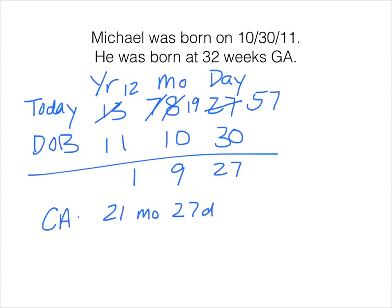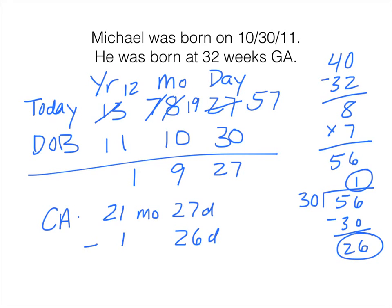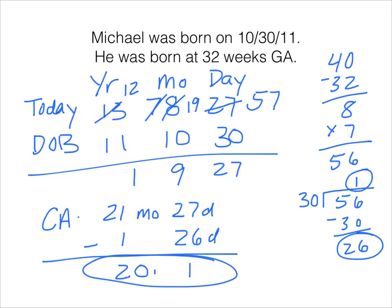So 40 minus 32 is 8 weeks premature. Multiplying by 7 gives 56 days premature. Dividing by 30: 30 goes into 56 once, leaving a remainder of 26. So Michael was 1 month and 26 days premature. Subtracting: 27 minus 26 is 1, and 21 minus 1 is 20. Michael has an adjusted age of 20 months and 1 day.